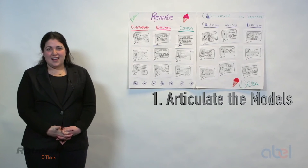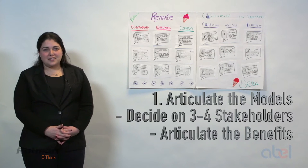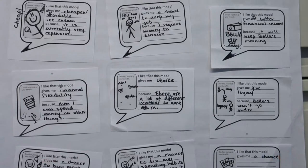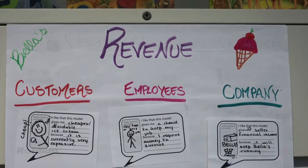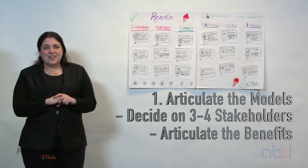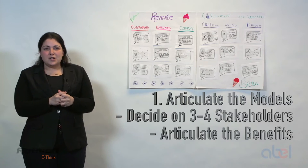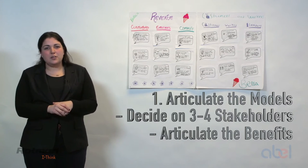Our second and third task is deciding on the stakeholders and articulating the benefits. So what you can see from the student work is that they've chosen the customer, the employees, and the company as their three stakeholders. And what we have are what we've called benefit bubbles. And each benefit bubble is meant to be the voice of that stakeholder saying what is good for them of that model and how is that good produced.